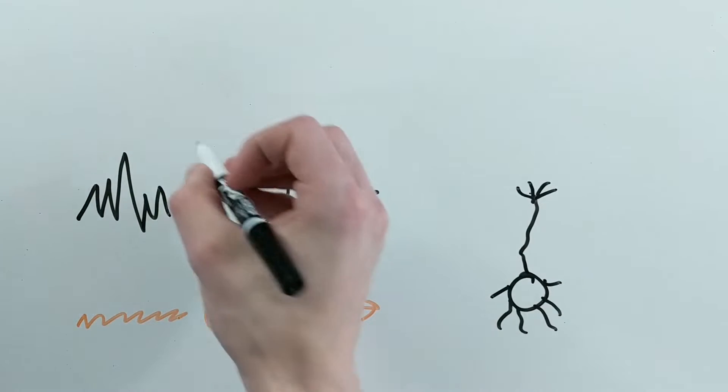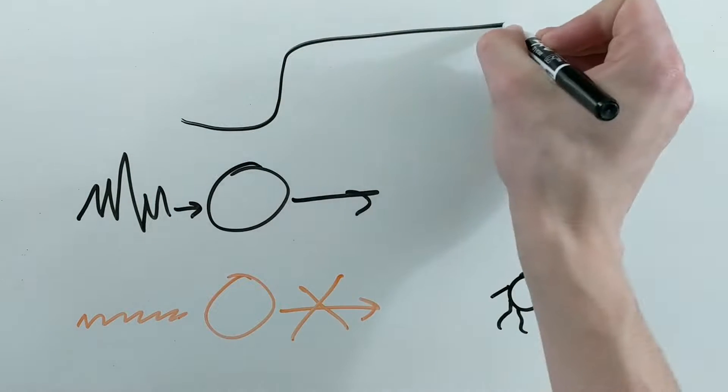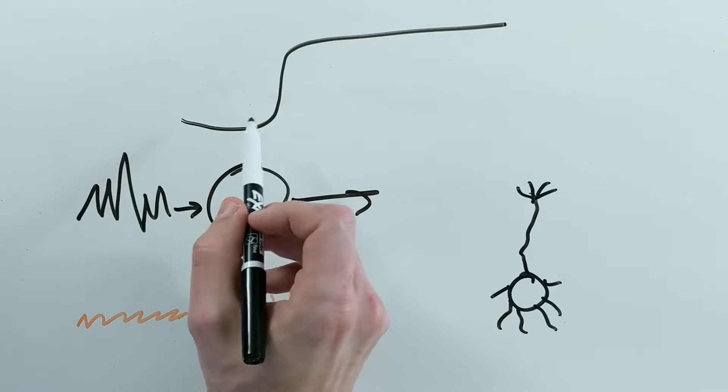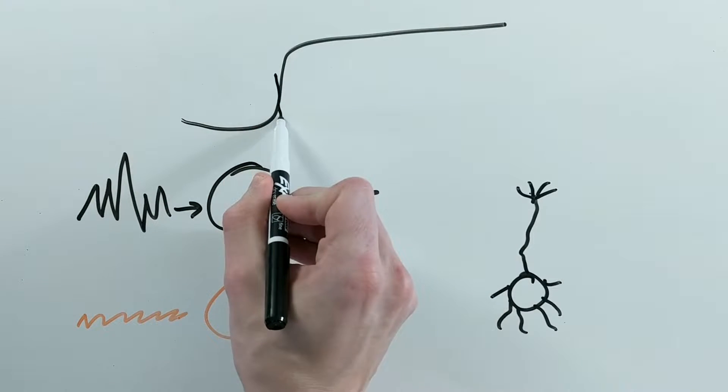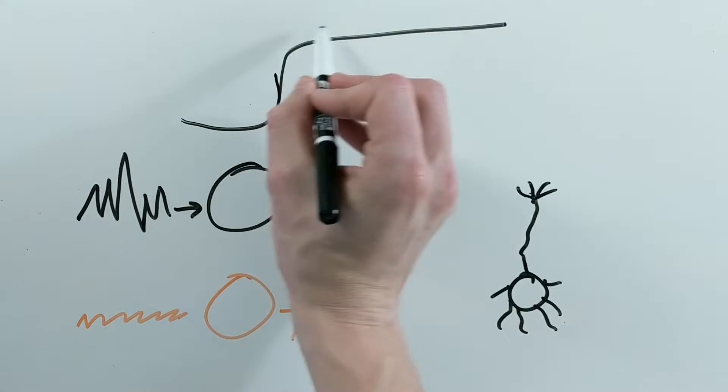This is why originally most activation functions looked like this, where they're close to zero in the beginning and then all of a sudden when they hit some threshold it jumps up close to one.